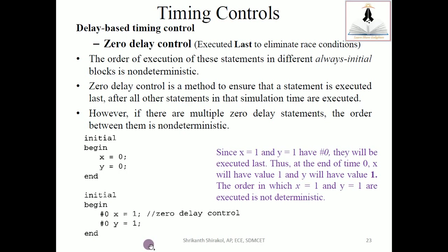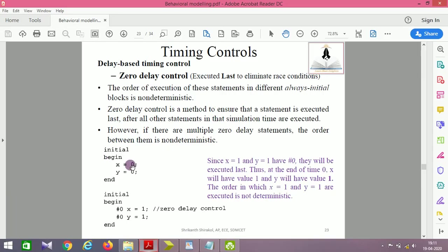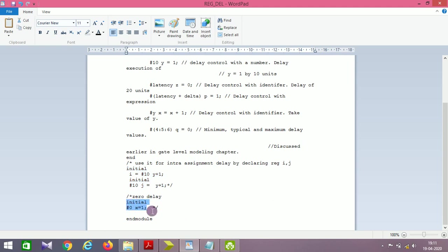Next is zero delay control. Zero delay control is executed last to eliminate race conditions. In always and initial blocks, the order of execution is non-deterministic. When multiple statements start at zero simulation time — for example, 'x = 0' in one block and 'x = 1' in another — there's a race condition. Wherever you specify #0, that statement is given the highest priority. So with #0, x will be assigned 1.